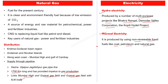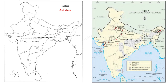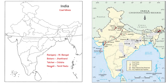Now we will study the map. The shaded portion indicates coal mines. We have to locate four places: Raniganj, Bokaro, Talcher, and Neyveli. First, we locate Bokaro, which is in the Damodar Valley area. Then we locate Raniganj, which is in West Bengal.